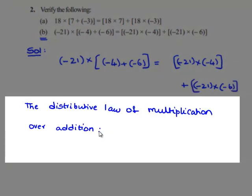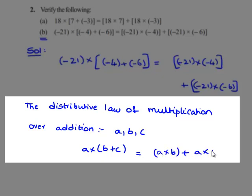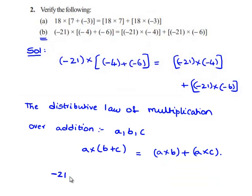The distributive law of multiplication over addition states that for any integers a, b, and c: a times (b plus c) equals a times b plus a times c. Here the integers a, b, and c are negative 21, negative 4, and negative 6.